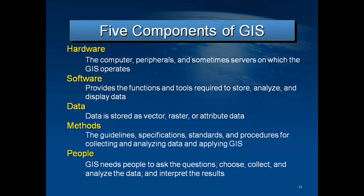GIS is not only great software containing some powerful information, data, and maps, but there are other things you need to consider. There are five components of GIS, as you see on this slide: hardware, software, data, methods, and people. In case you're listening on your MP3 player, it might be useful to hear those listed out.